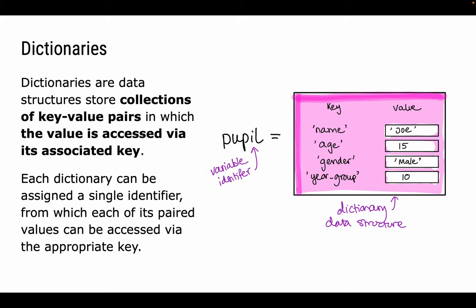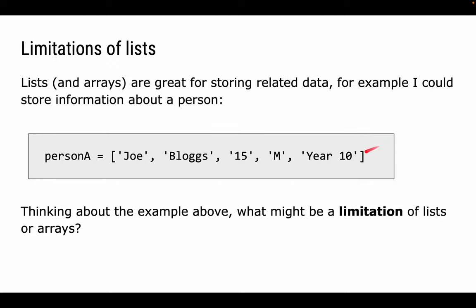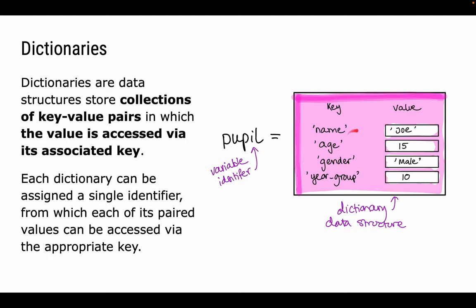So a dictionary gives us a better way of storing collections of key-value pairs in which values are accessed through associated keys. So this is a better version, perhaps, where we now have a pupil, and this is maybe a dictionary where we've got keys and values. So rather than just storing their name, we're storing those values associated with keys. So we're saying name is Joe, age is 15, gender is male, year group is 10. And now, if I want to access this particular pupil's age, I can just type something like pupil square bracket age, and it will give me 15. I don't need to know that this is location one. There are no numbered locations here. These are now associated values with keys. So this gives me an improvement over this method. And as I change the structure, if I wanted to add more key-value pairs, I could, and it wouldn't mess up the index numbers that I'm otherwise using.